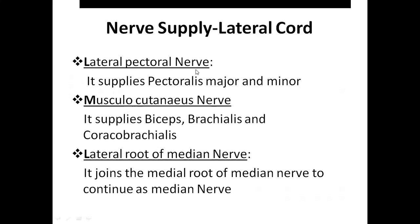The lateral pectoral nerve supplies the pectoralis major and pectoralis minor. The musculocutaneous nerve supplies biceps, brachialis and coracobrachialis. The lateral root of the medial nerve joins the medial root of the medial nerve to continue as the medial nerve.